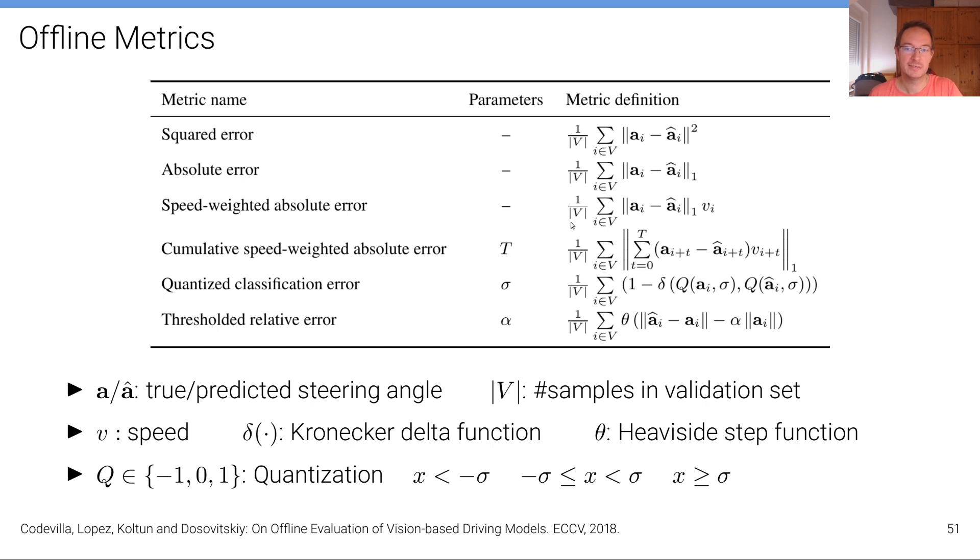The absolute error in terms of the L1 loss. The speed weighted absolute error where the absolute error is weighted by the speed assuming that at higher speeds errors cause more harm. The cumulative speed weighted absolute error where this is accumulated over time over a certain time interval. The quantized classification error where the action, the steering angle, is first quantized into a set of discrete bins and then this quantized classification error is measured.